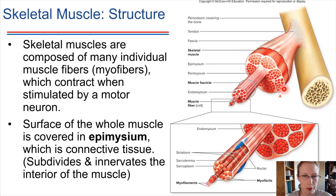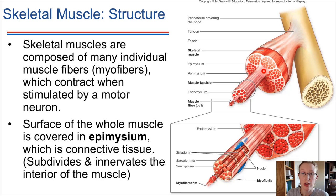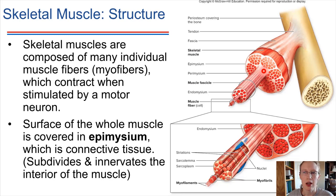The muscle itself is wrapped in what we call epimysium, which innervates through all the different muscle fibers. That's really important — if that connective tissue was not innervating through the muscle, the muscle would be very weak and would potentially tear much more easily. That connective tissue built in is very important for strengthening the whole muscle structure.